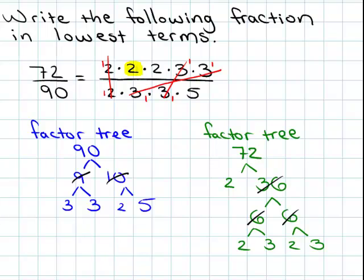So we are going to be left with 2 times 2 in the numerator and we have a factor of 5 in the denominator. So our final answer is going to be 4 fifths. This would be the way we would write 72 over 90 in lowest terms.